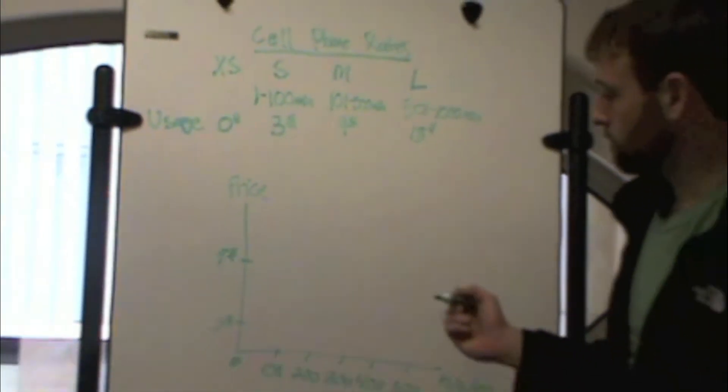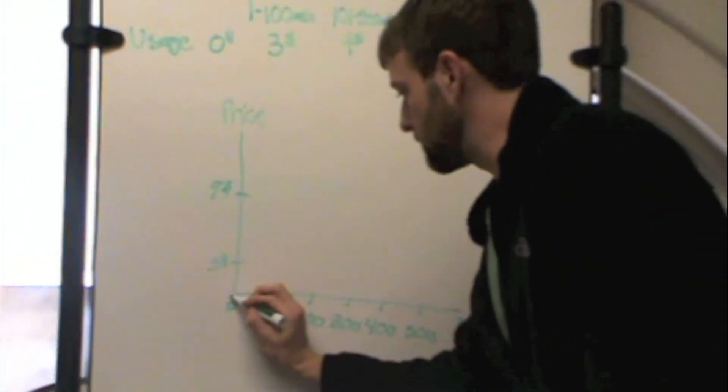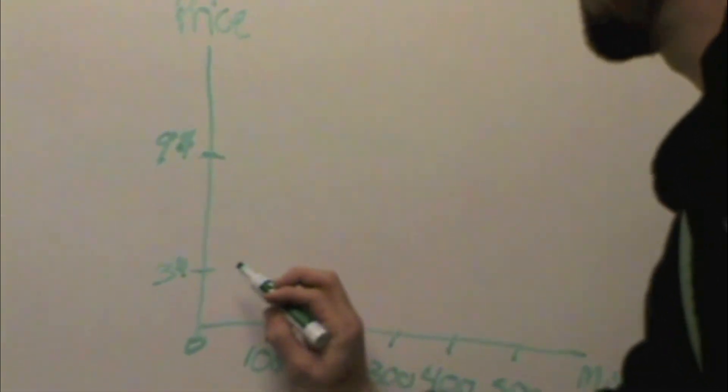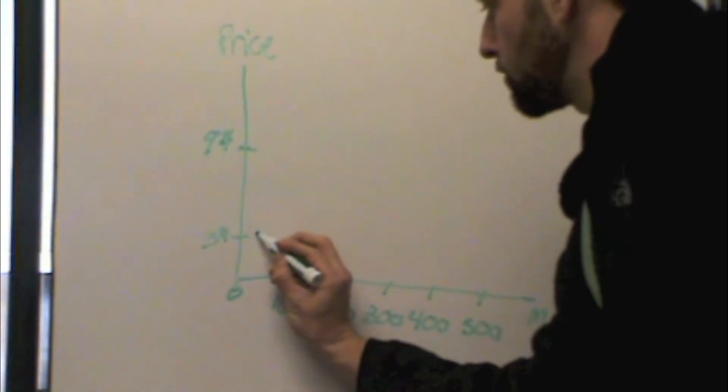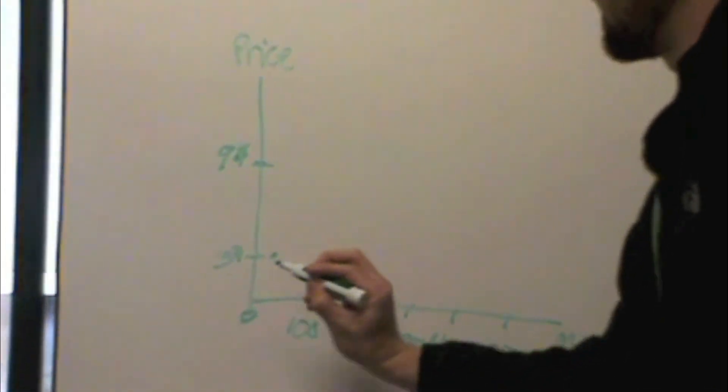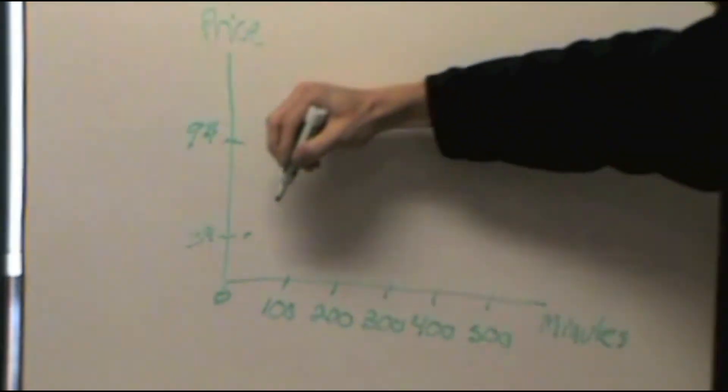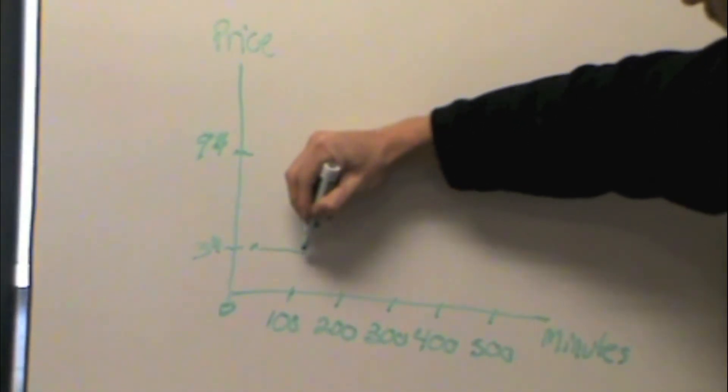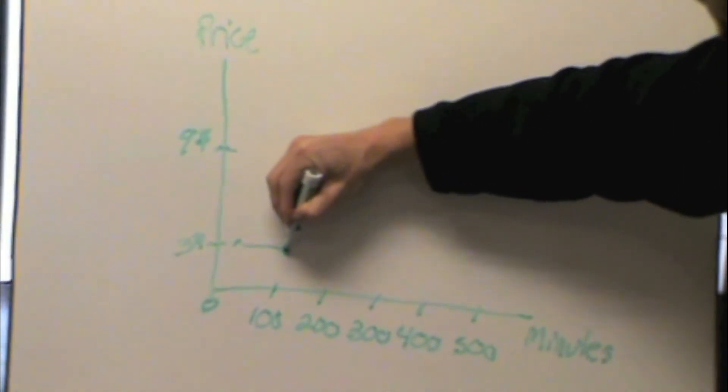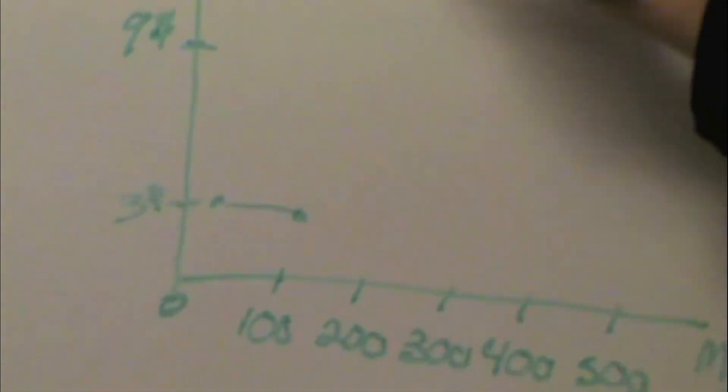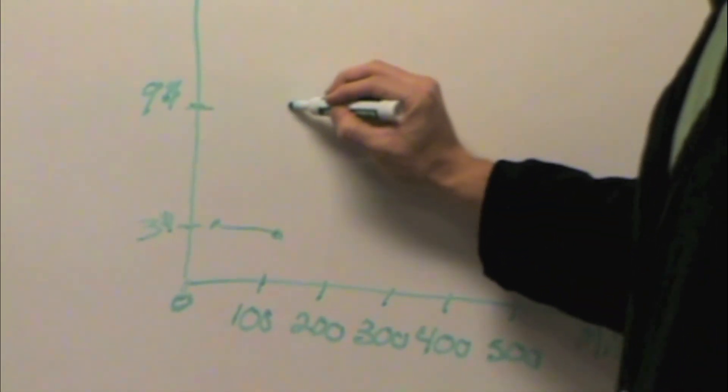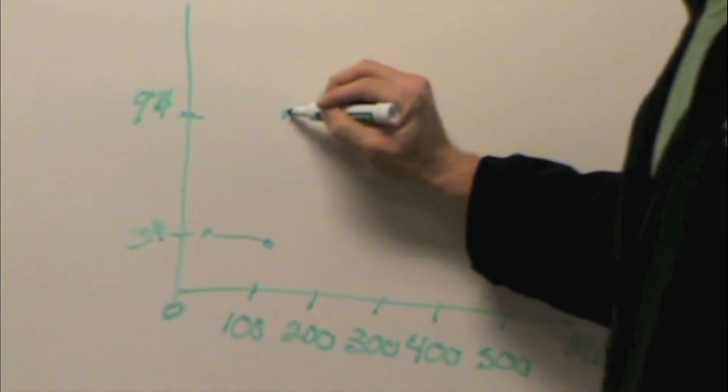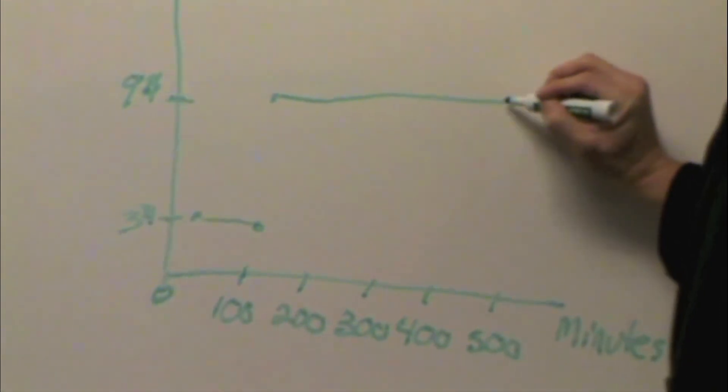So basically if you show this on a graph, what's going to happen is at zero dollars you're going to be down here. Once you use your first minute, it's going to bring you up to three dollars, and then through your one hundredth minute, all the way through here, it is going to be three dollars. And then once you hit your one hundred and first minute, it's going to jump up to nine dollars and then go to five hundred.